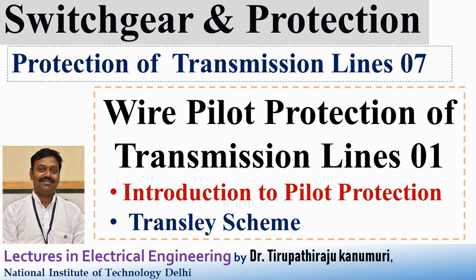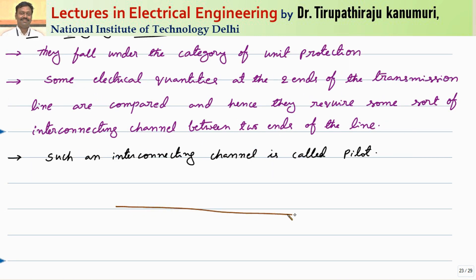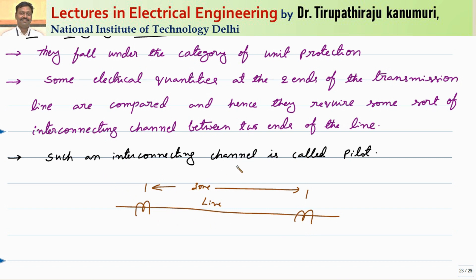Today we are going to discuss about pilot wire protection schemes of transmission lines. Pilot wire protection comes under the category of unit protection. In unit protection, CTs are connected at both ends of the transmission line. The quantities from both ends are compared and accordingly a decision is taken — whichever zone we want to protect, CTs are placed on both ends of that zone. We can either compare currents on the secondary side or compare voltages. The interconnecting channel that links these two quantities is called the pilot, which is why it is called pilot protection.